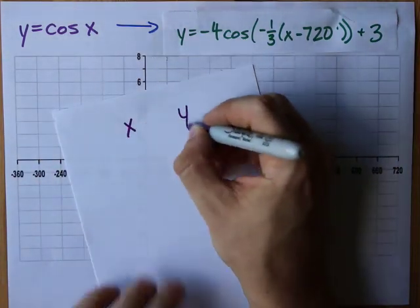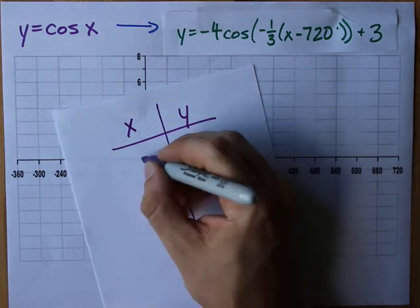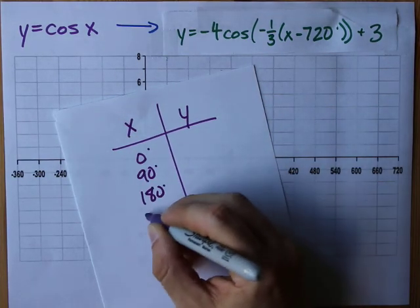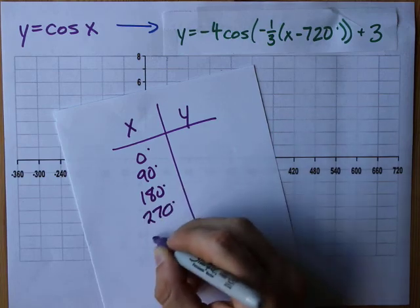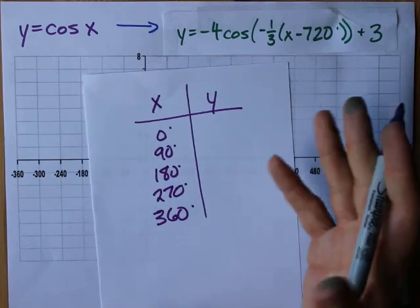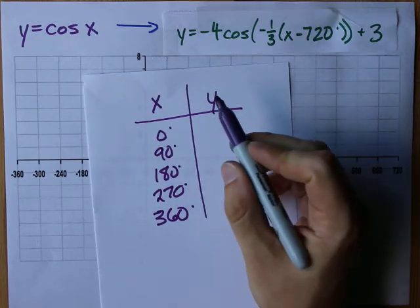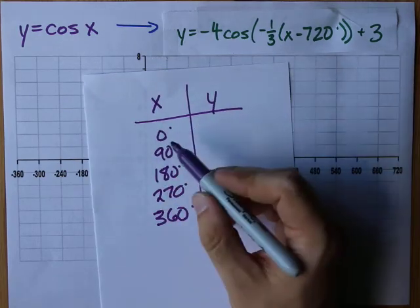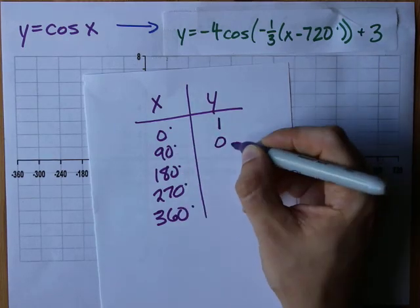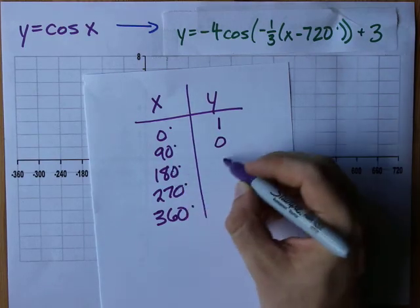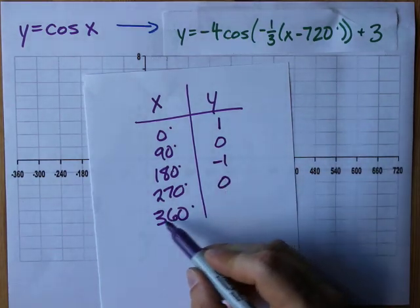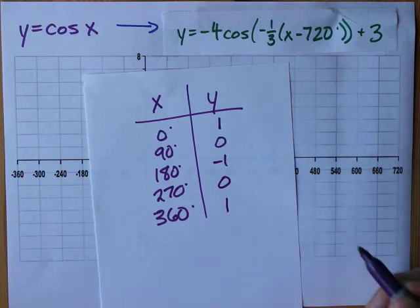I've personally memorized it, but all you need to memorize is zero degrees, 90, 180, 270, and 360. Then you can use your calculator or some other trick to figure out what the cos of each of those is. Cos 0 is 1, cos 90 is 0, cos 180 is negative 1, cos 270 is 0, and cos 360 is positive 1 as well.